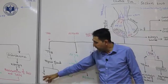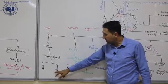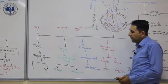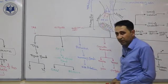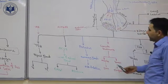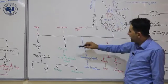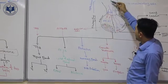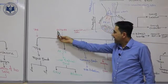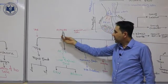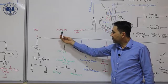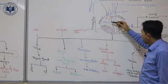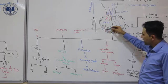Triiodothyronine and thyroxine have several functions. They have a role in metabolism and in maintaining homeostasis of the body. For ACTH: the hypothalamus first produces ACTH-RH, or adrenocorticotropic hormone releasing hormone, which stimulates the endocrine cells of the anterior lobe to produce ACTH.